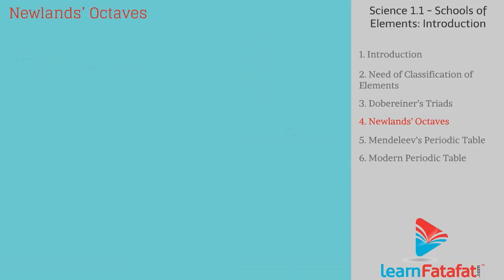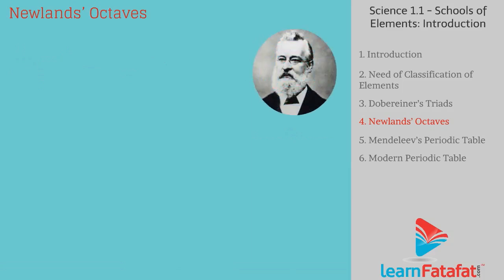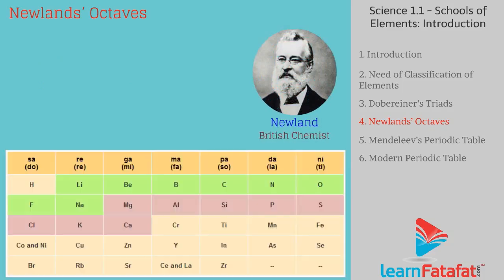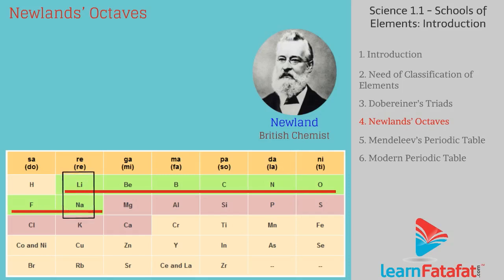The next attempt at classification was made by British chemist Newland. He observed that when elements are arranged in increasing atomic masses, every eighth element shows similar properties to the first. So he formed octaves — groups of eight elements.